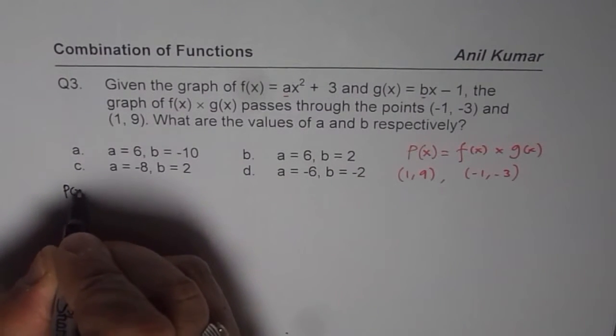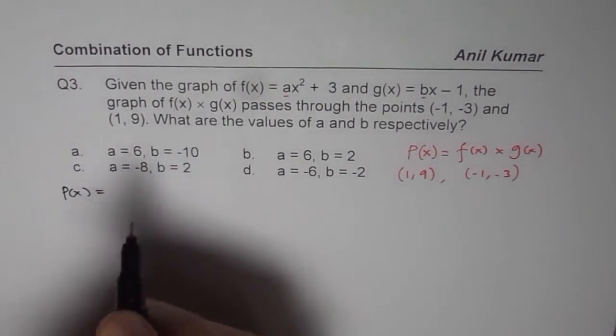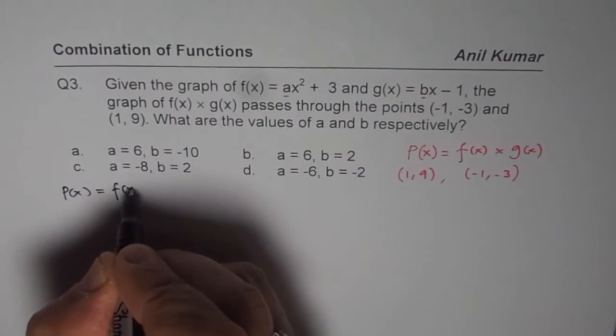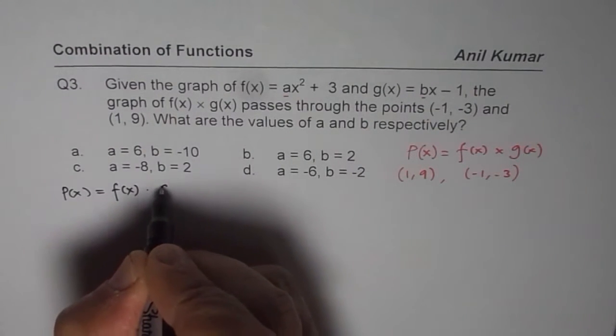So, p of x is equals to f of x times g of x. So, we will say f of x times g of x, right?